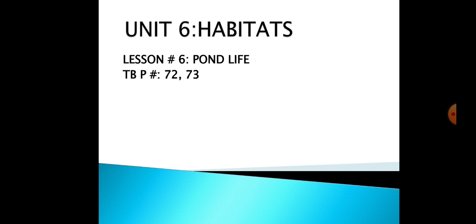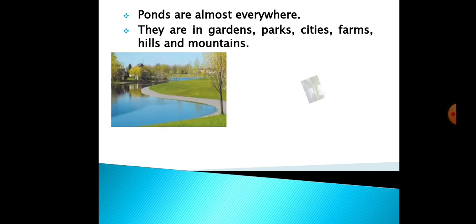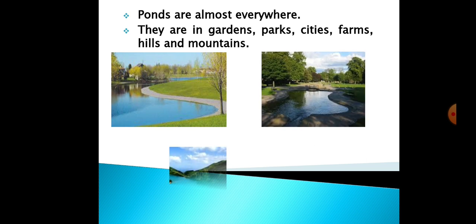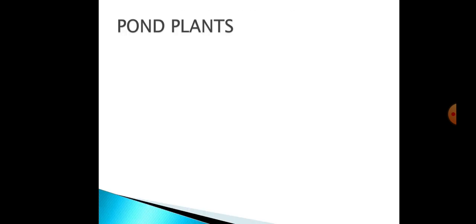Today we will discuss how the pond is a habitat for many water plants and water animals. Ponds are found everywhere — in gardens, parks, hills, farms, and mountains. In this lesson we will discuss pond plants and pond animals, starting first with the pond plants.